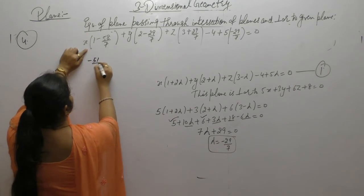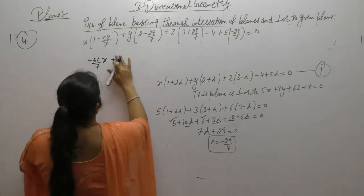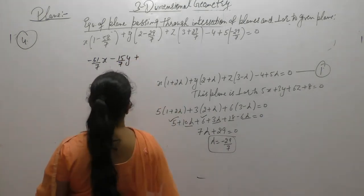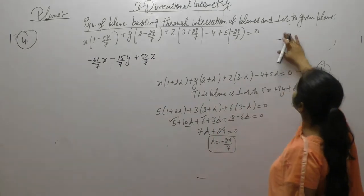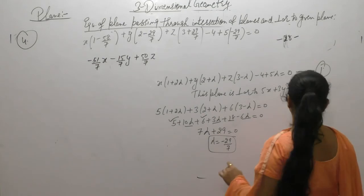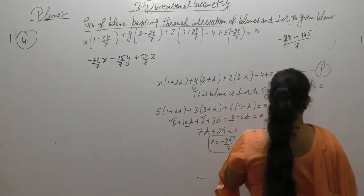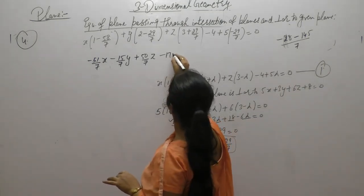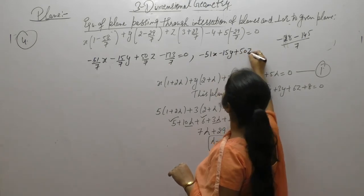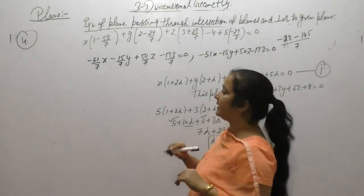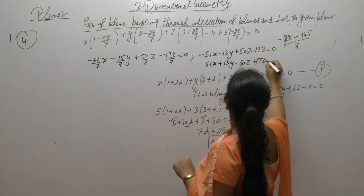Simplifying each term with denominator 7: coefficient of x is (7 minus 58) by 7 equals minus 51 by 7; coefficient of y is (14 minus 29) by 7 equals minus 15 by 7; coefficient of z is (21 plus 29) by 7 equals 50 by 7; constant term is (minus 28 minus 145) by 7 equals minus 173 by 7. Taking LCM 7 and multiplying through: minus 51x minus 15y plus 50z minus 173 equals 0. Taking negative common: 51x plus 15y minus 50z plus 173 equals 0.